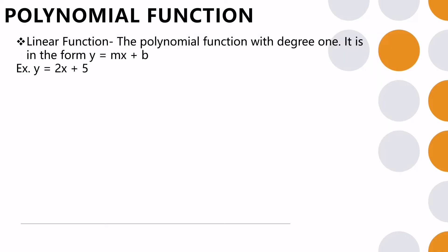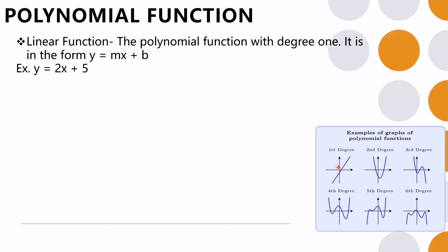Types of polynomial functions include the linear function — a polynomial function of degree 1, in the form y equals mx plus b. For example, y equals 2x plus 5 has degree 1. The graph of a linear function is a straight line.